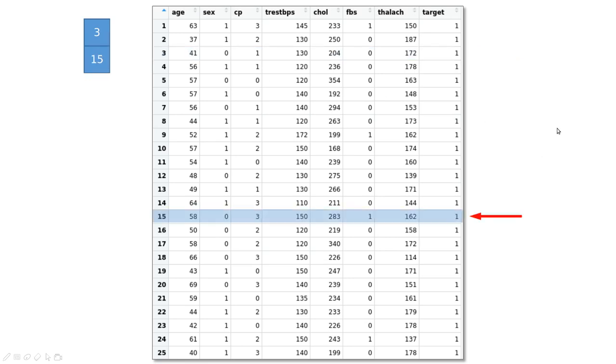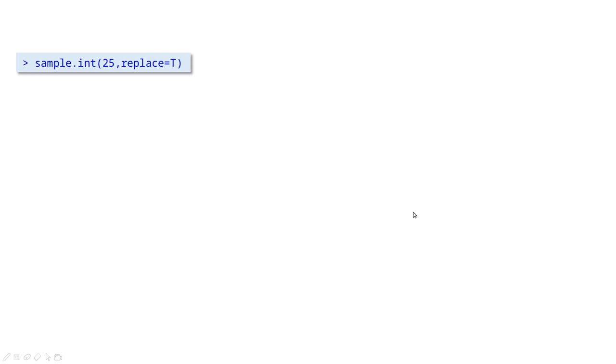another random number, 15, another 1, 19, by chance 3 again, and so on and so forth, and then we end up with another data frame. In this case, we're going to call this a bootstrap data frame, in which we may have some repetitions, but we're playing with the same length as the original data set.